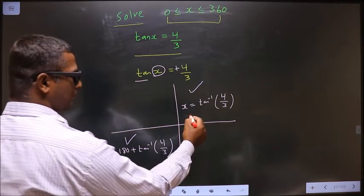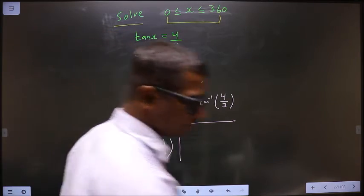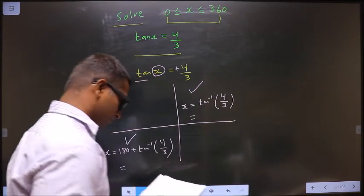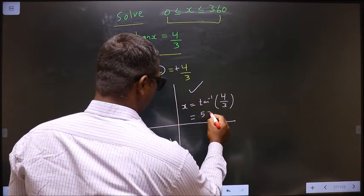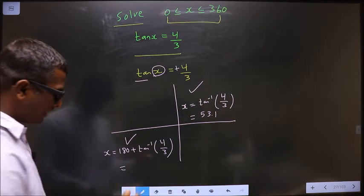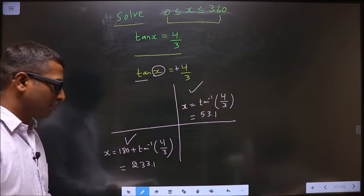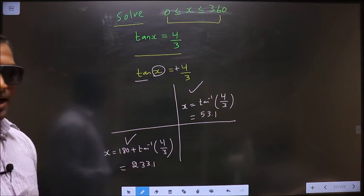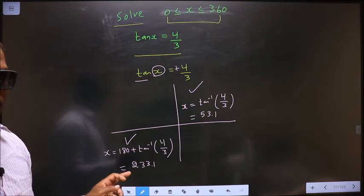Now you put this in the calculator. You get 53.1 degrees. Put this in the calculator, you get 233.1 degrees. So these are our answers.